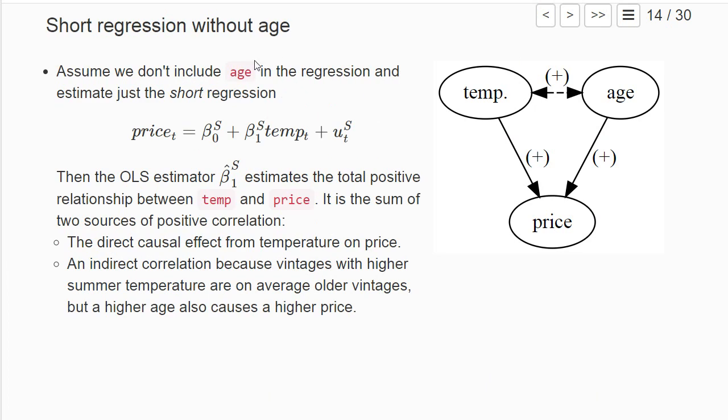Now assume we don't include age as an additional variable in our regression. We estimate this short regression where we explain the price only by the temperature during the growing season.